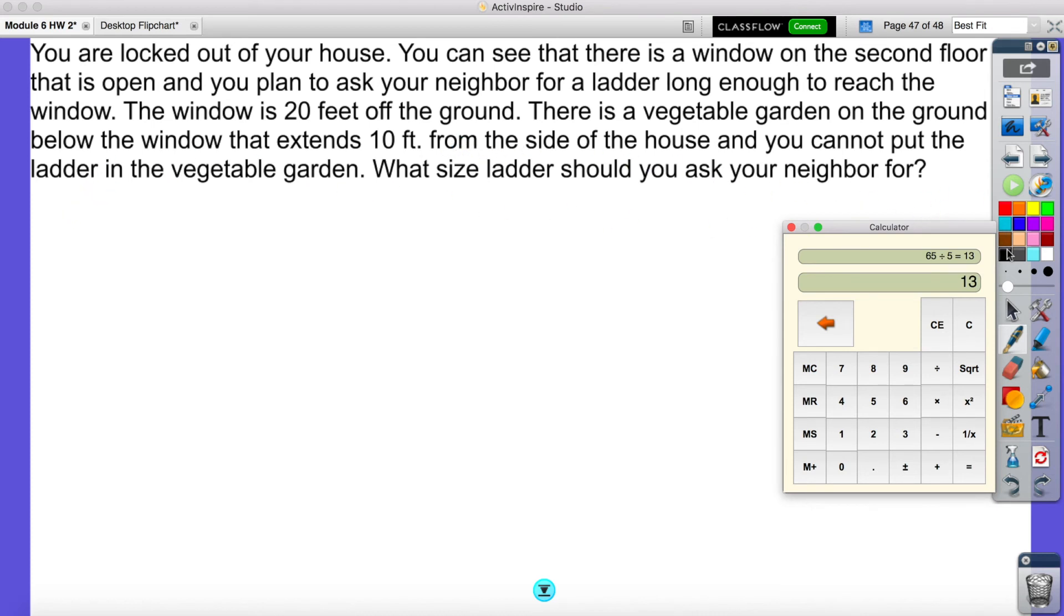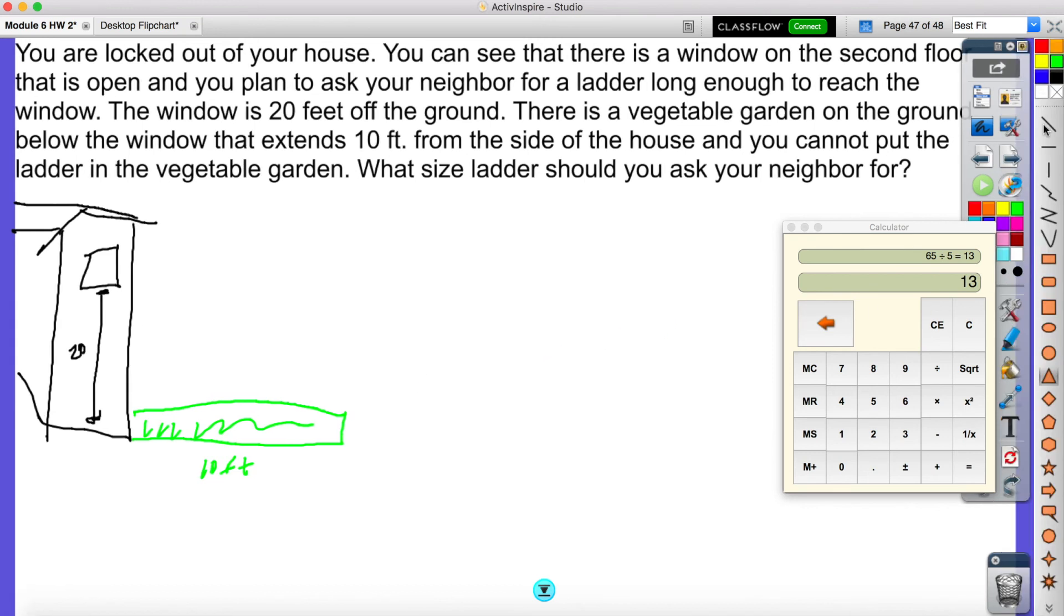So what this is saying is you have a house. Here's our house. And you have a window right here, and the distance right here is 20 feet. Then you have a gardening box. We'll label this in green. We have a gardening box right here, and this is 10 feet long. And it's saying you're going to have this ladder, which I'm going to label with this line, and we'll do that in red. We're trying to put a ladder from here to here, and it's saying how long is that ladder?